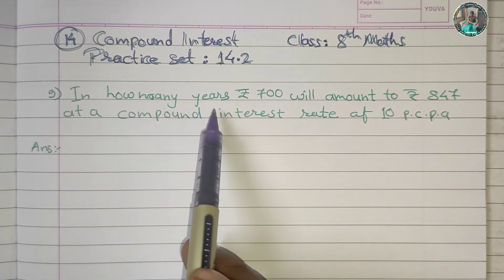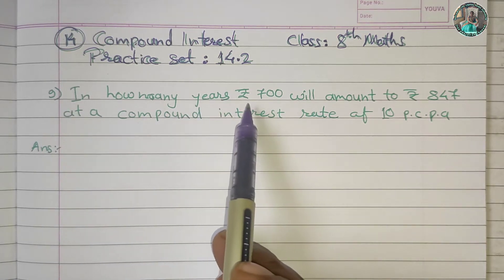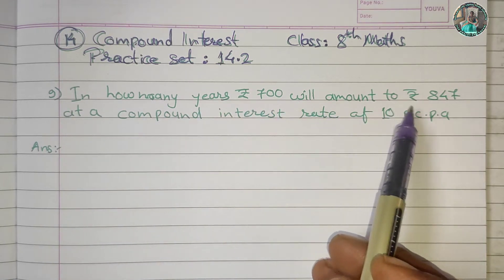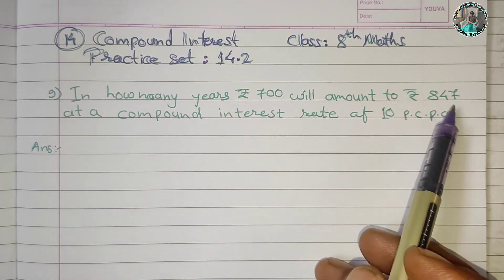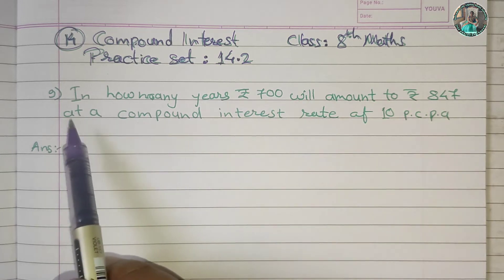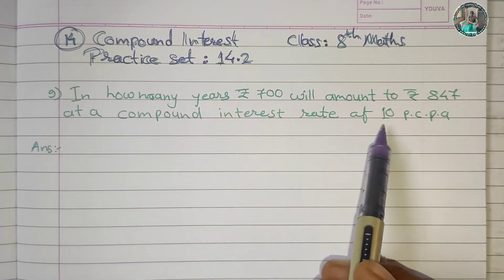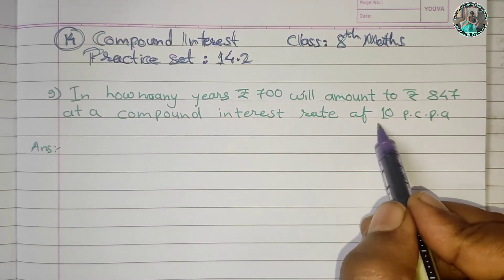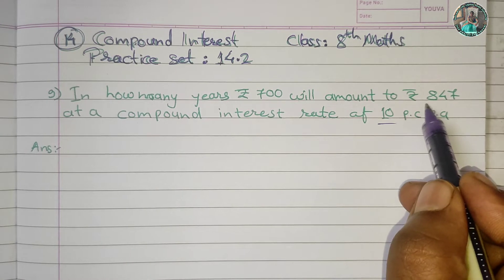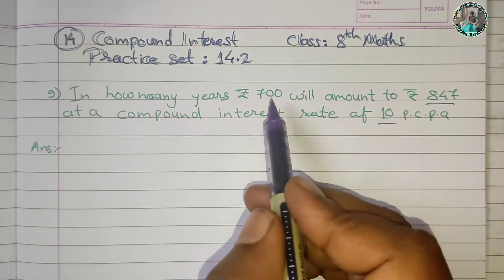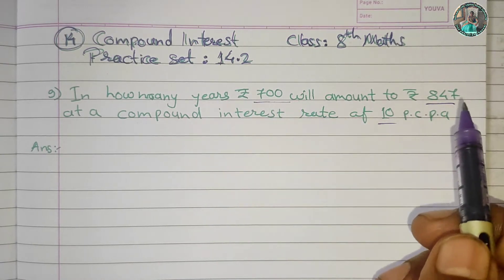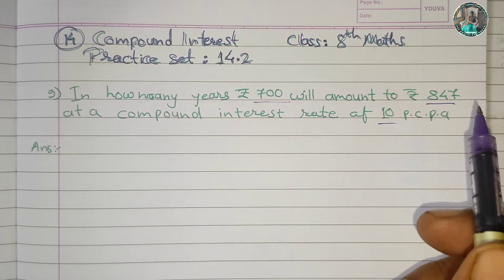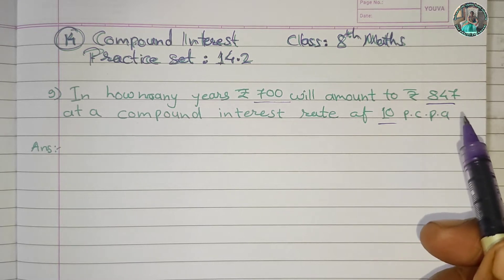In how many years will Rs. 700 amount to Rs. 847 at a Compound Interest rate of 10% per annum? Since the rate is given, the amount is given, and the duration is missing.